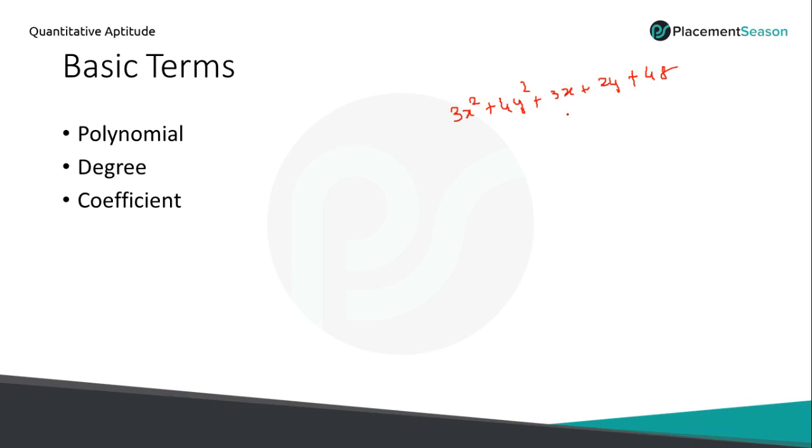In polynomial, we can have subdivisions. If you have only one term like 3x², then it is monomial. If you have two terms, 3x² plus 4y² is binomial. If you have three terms, 3x² plus 4y² plus 3x, then this is trinomial. If you have more than three terms, that is called polynomial. Polynomial is nothing but an expression.